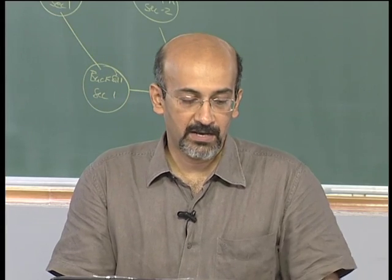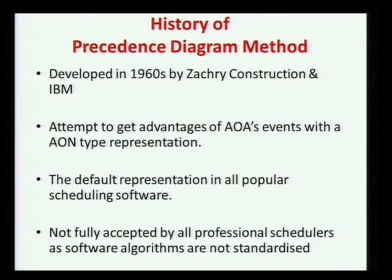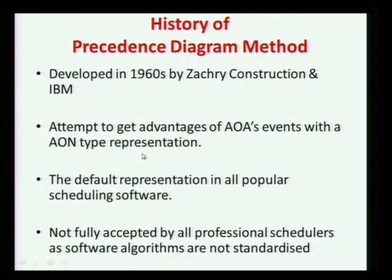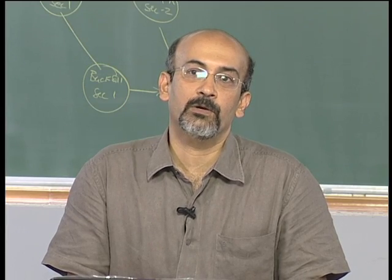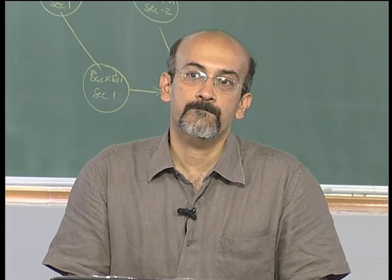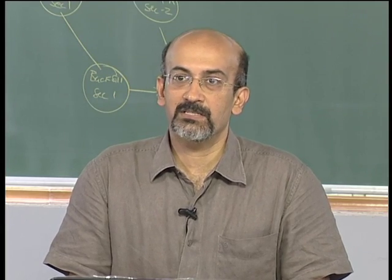This actually came out of AON - the activity on node diagram which Fondahl had suggested. It was taken up by a construction company called Zachary in the 1960s and along with IBM they made this precedence diagramming technique. The attempt was to get the advantage of AOA events with AON-type representation. We briefly touched upon AOA earlier - what did we find as a problem with AOA? We had to create dummy activities.